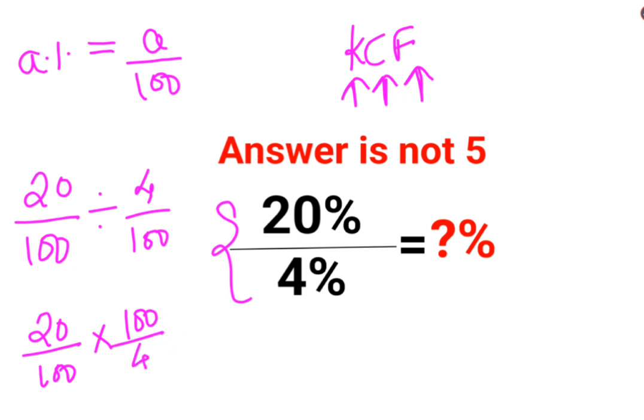So here when you have to do this, you can cancel this. This is 1 and this is 5. Answer is yes 5 but the problem is they are looking for the answer in terms of percentage.